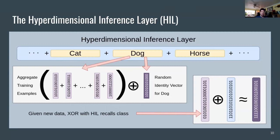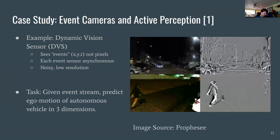The class that matches the query — say, dog — will be statistically much closer to the random identity vector for dog than any other class. This forms the basis of the hyperdimensional inference strategy.